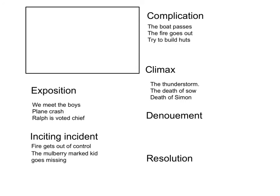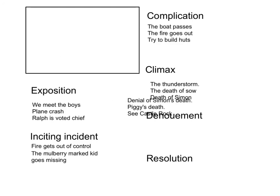The denouement includes the denial of Simon's death and Piggy's death. We also really get to see Castle Rock for the first time in the denouement.